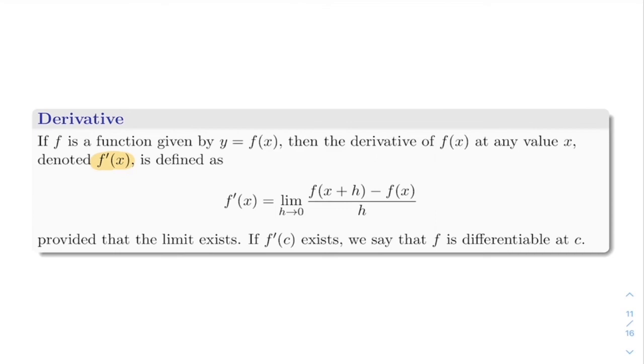The derivative will be equal to the limit when h goes to zero of f of x plus h minus f of x divided by h, which corresponded to the average rate of change in the interval between x and x plus h. Of course this definition only makes sense if the limit exists.